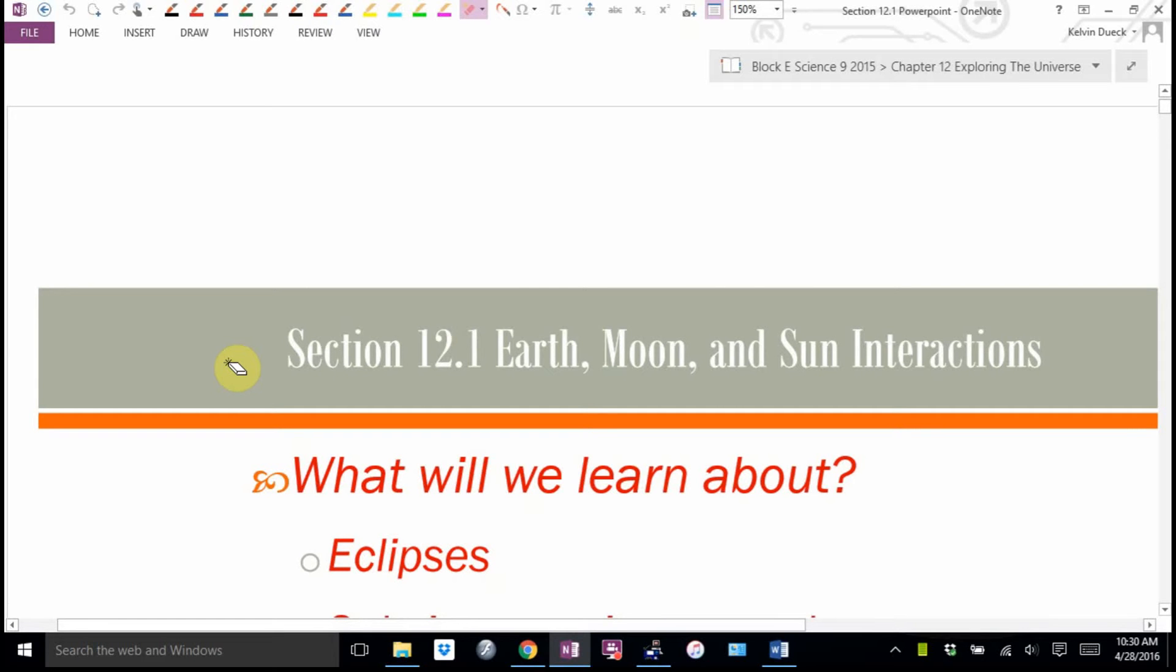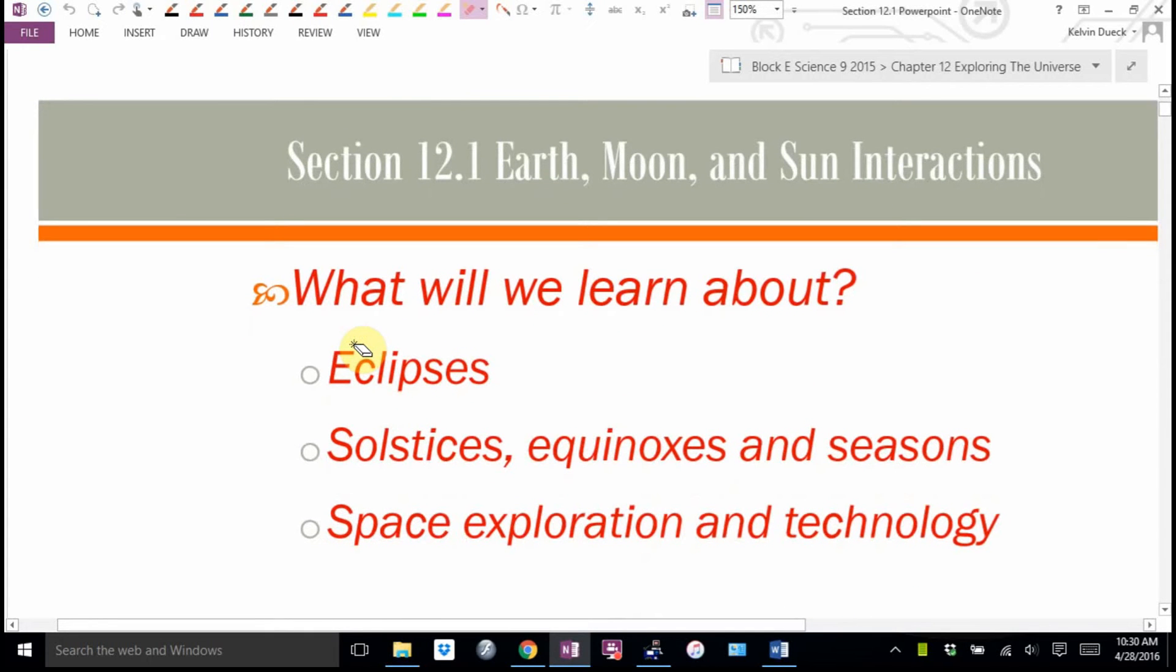So, Chapter 12, Earth, Moon, and Sun interactions, if you really want to break this down. What are we going to learn about? Eclipses, solstices, equinoxes, and seasons, space exploration, technology, aliens, all that stuff. This is our last astronomy unit.